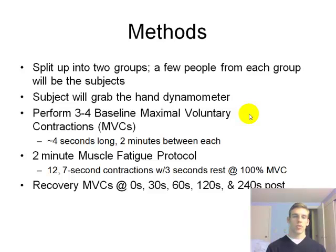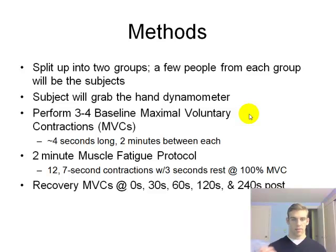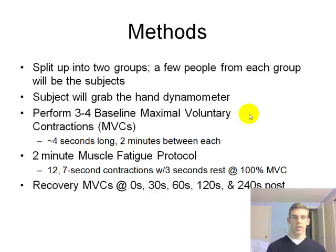You're going to produce three to four baseline MVCs, or maximal voluntary contractions. Subjects will squeeze the hand dynamometer as hard as they can for about four seconds to see how much force they can produce at their maximal level. They'll squeeze for four seconds and then rest for two minutes. We'll do this three to four times to establish a good baseline of maximal force production.